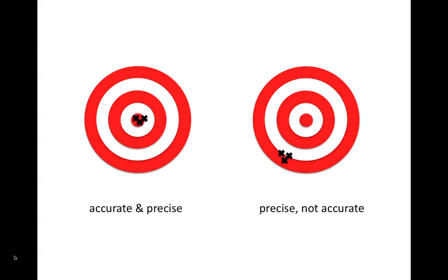So if we look at this illustration of a target, the X's on the left target are both accurate and precise. They're accurate because they all hit the bullseye of the target, and they're precise because they're all close together.